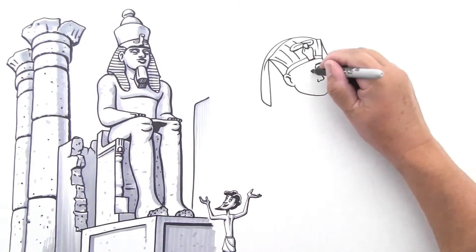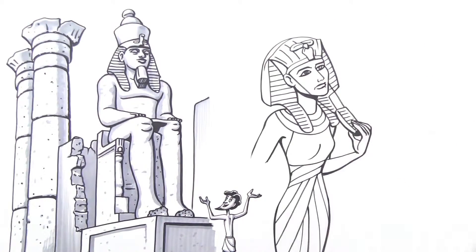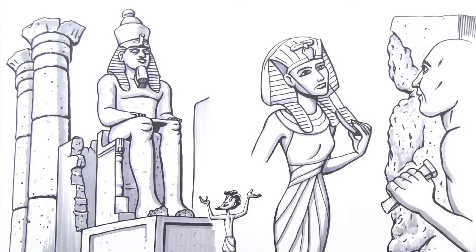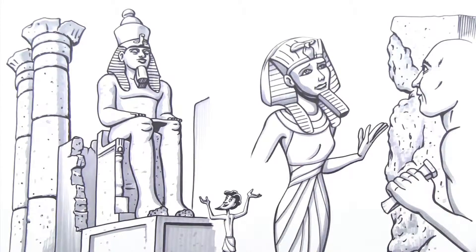Even the female pharaoh, Hatshepsut, commissioned statues of herself with the false beard to reinforce her position of authority. Oh, attractive.